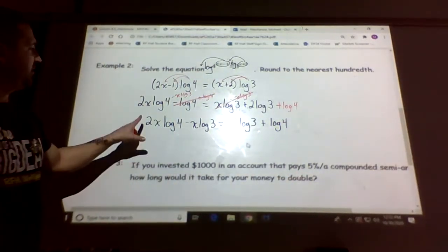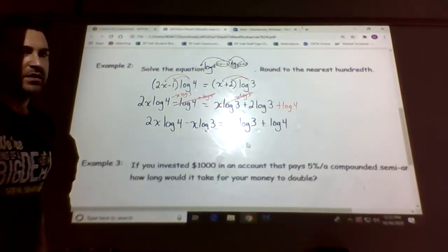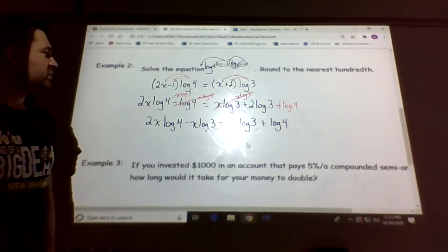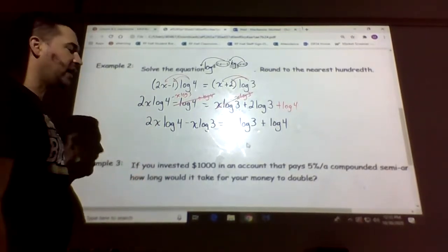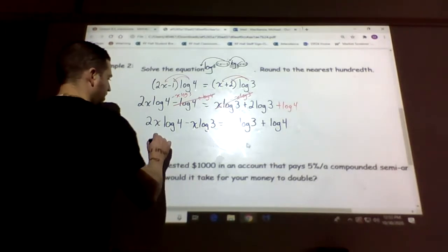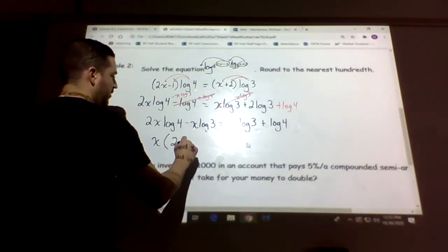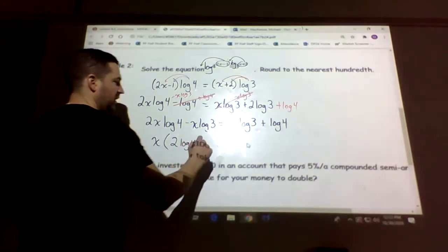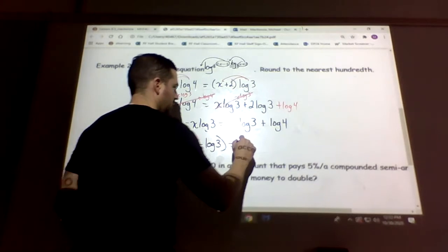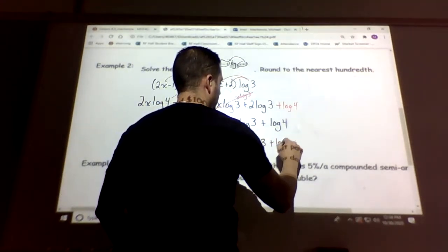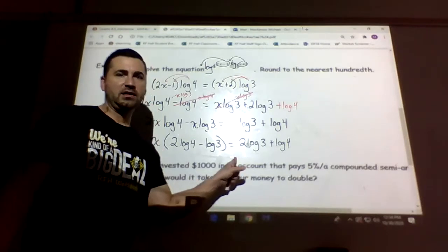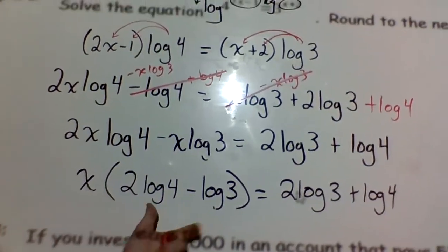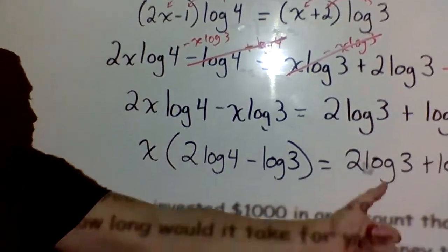We have x·log 4 and x·log 3 on the left side, so factor out the x: x times (2·log 4 minus log 3) equals 2·log 3 plus log 4. To isolate x, divide both sides by (2·log 4 minus log 3).